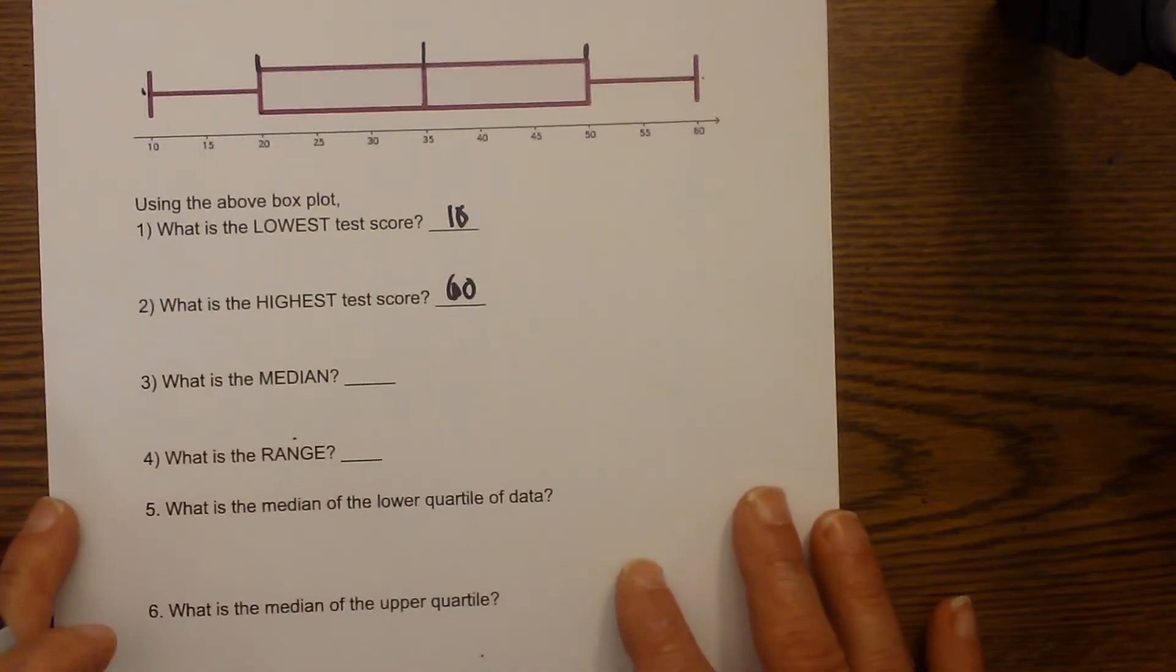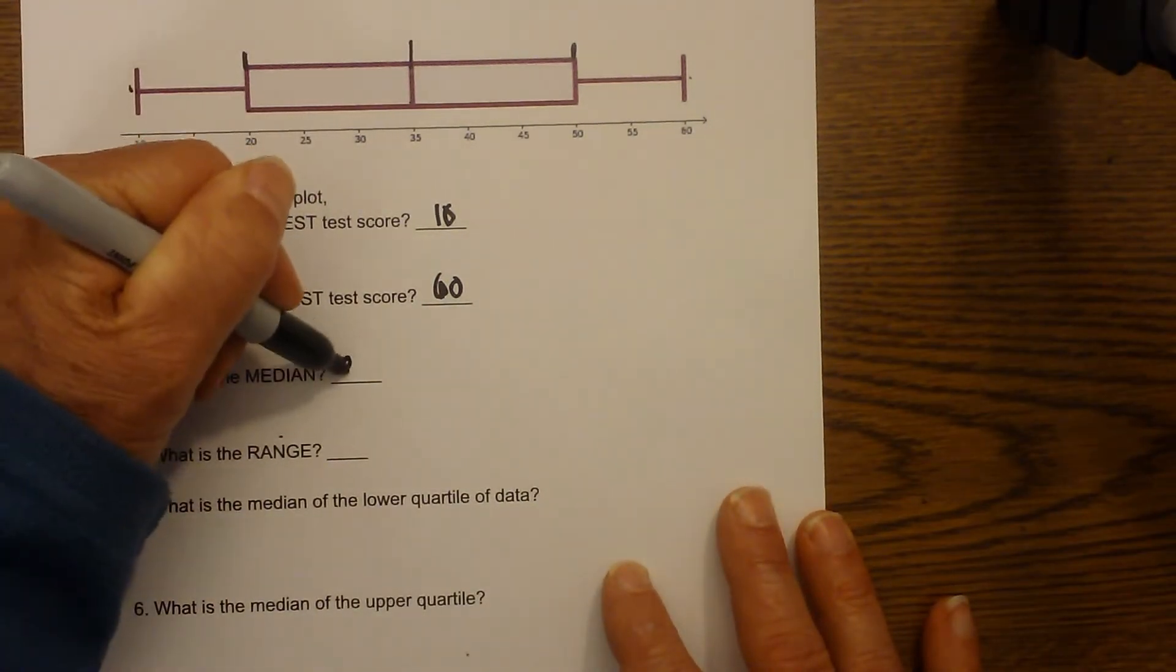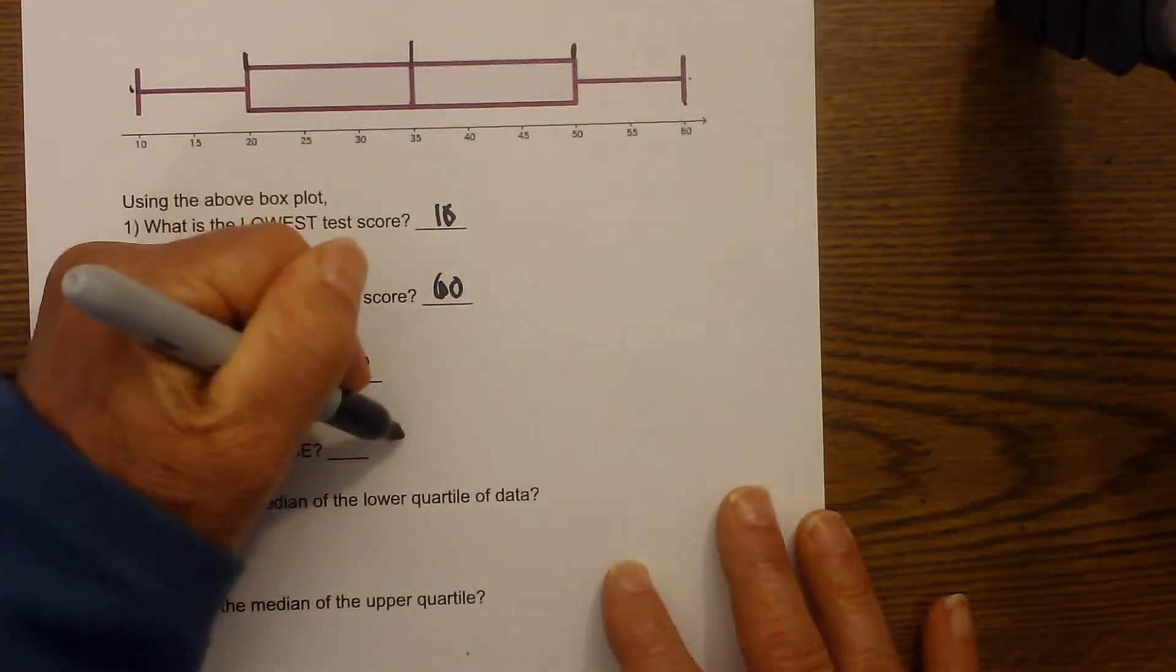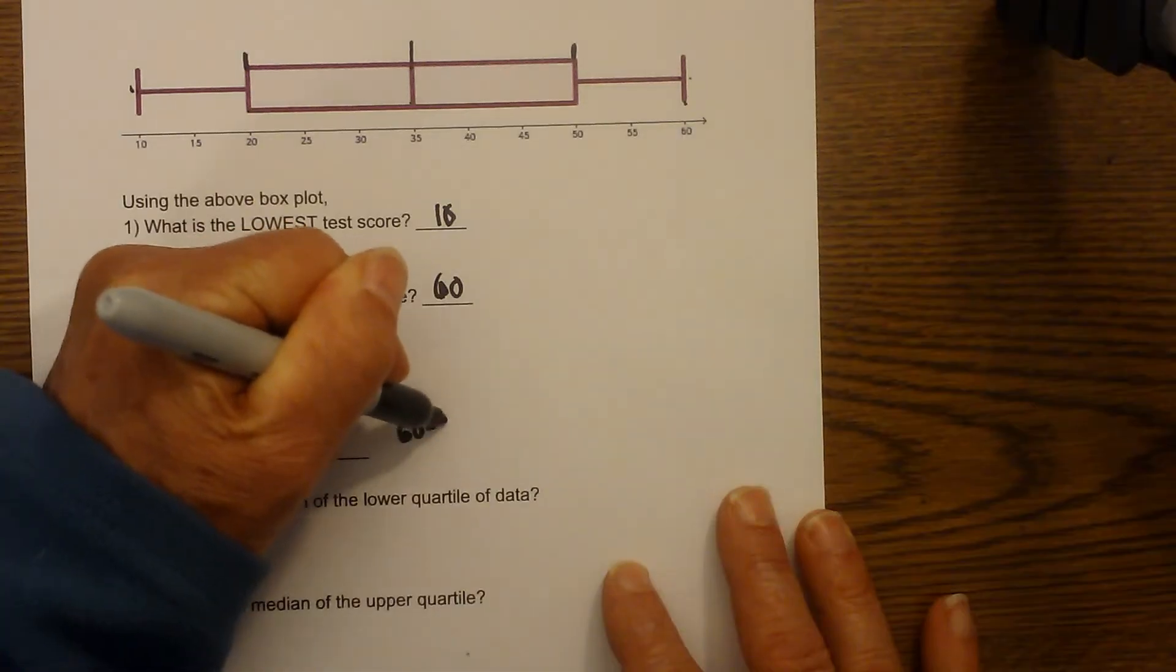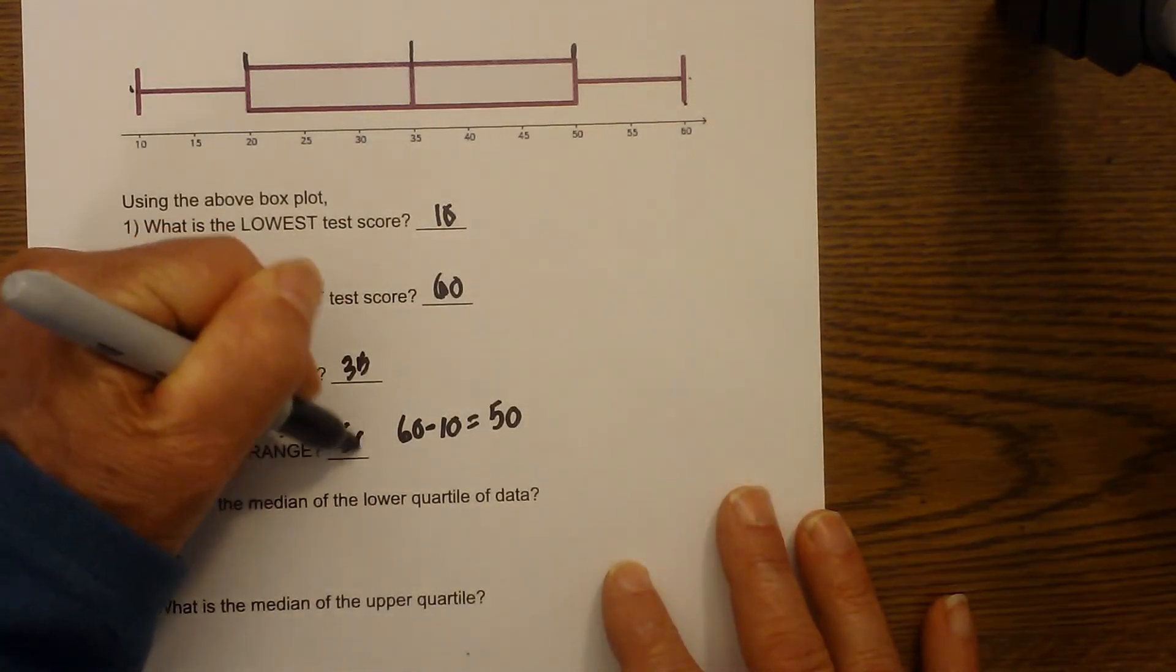The median is right in the middle, so that's going to be 35. And the range, again, we take the high minus the low, which is 60 minus 10, and that equals 50. So the range is 50.